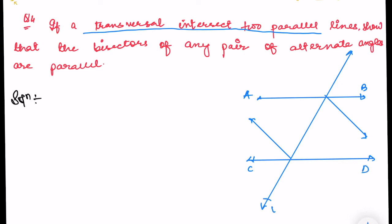Let me name the points: this is E and this is F. Let me name this G, this is H, this is I, and this is J.